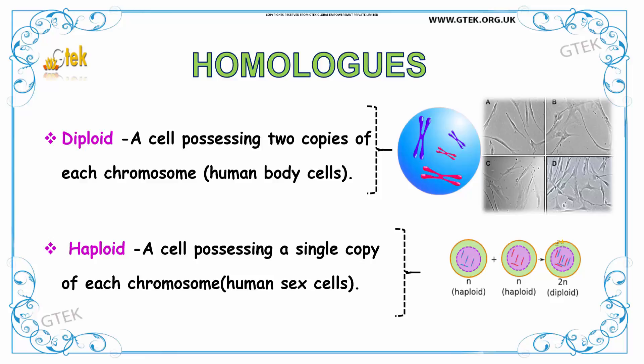Homologous chromosomes have two types. The first one is diploid and the second one is haploid. A diploid is a cell possessing two copies of each chromosome, that is human body cells. Whereas a haploid is a cell possessing a single copy of each chromosome, that is human sex cells. Here you can see the haploid and diploid cells.